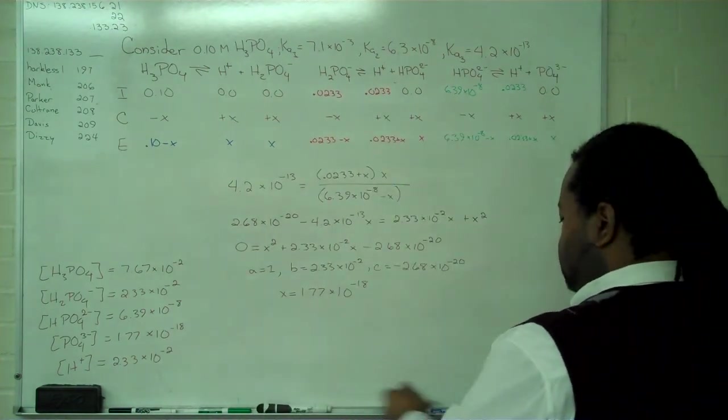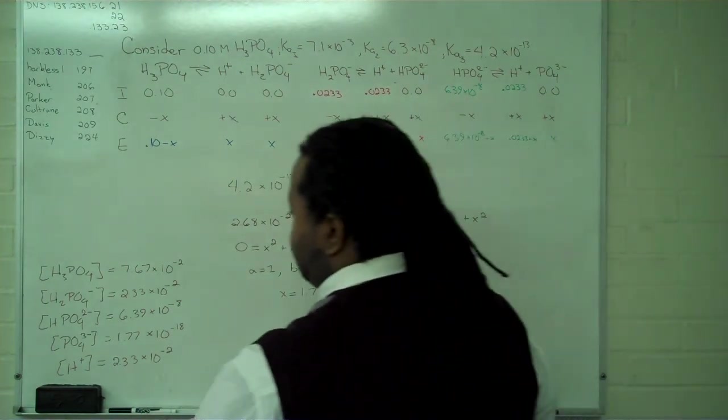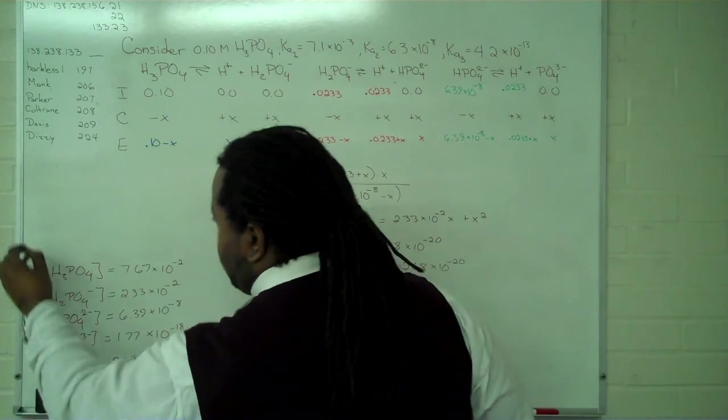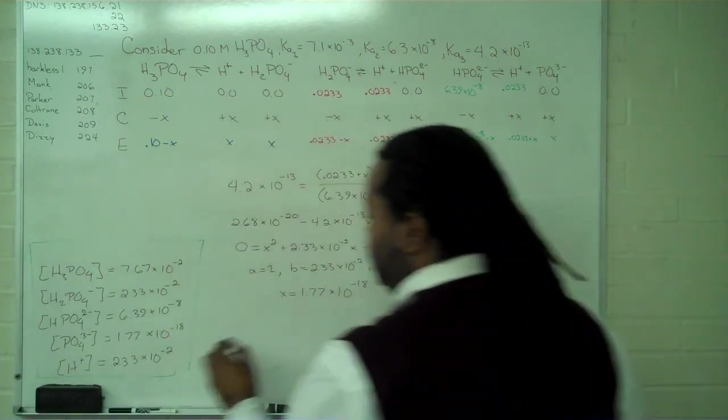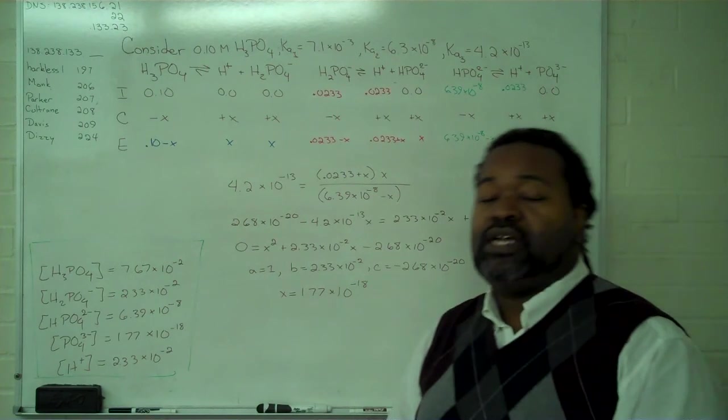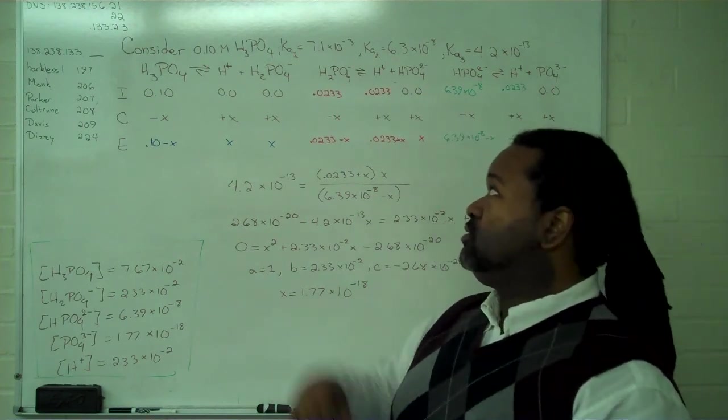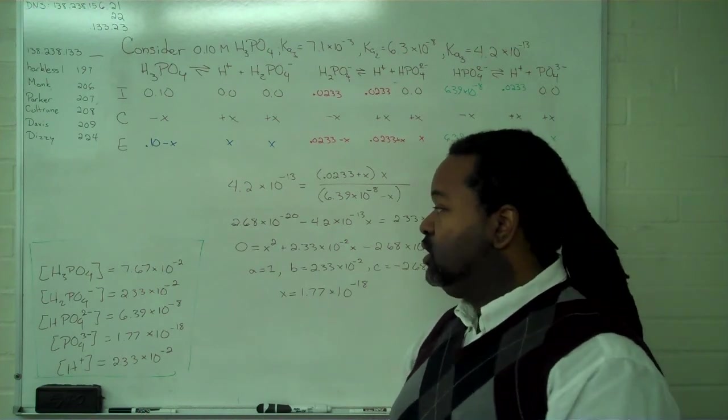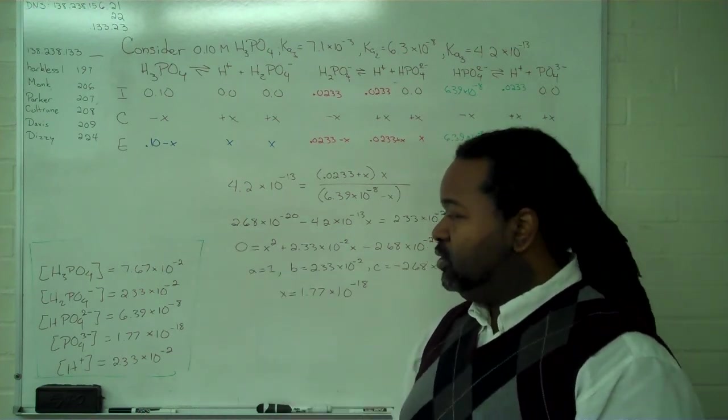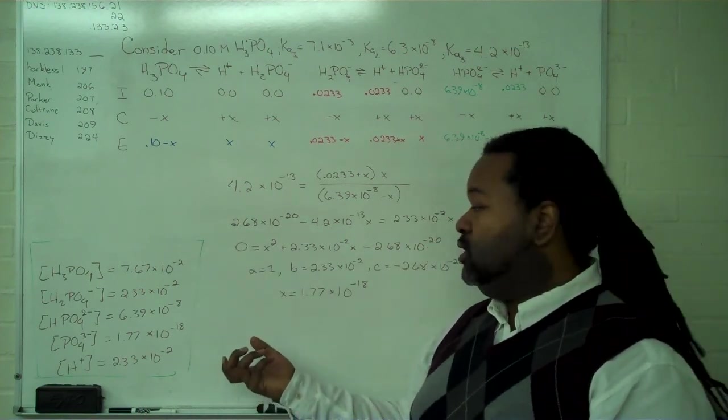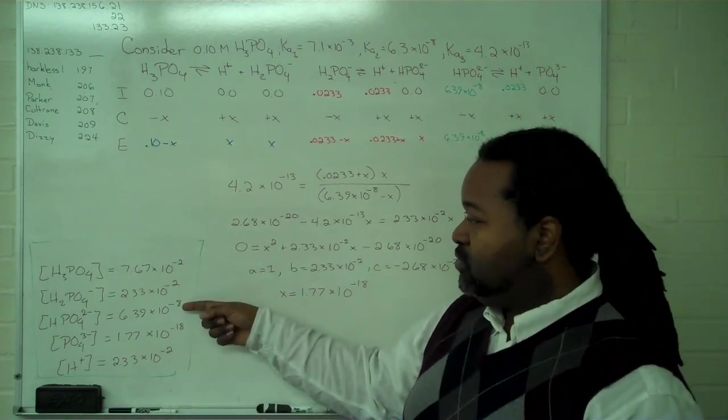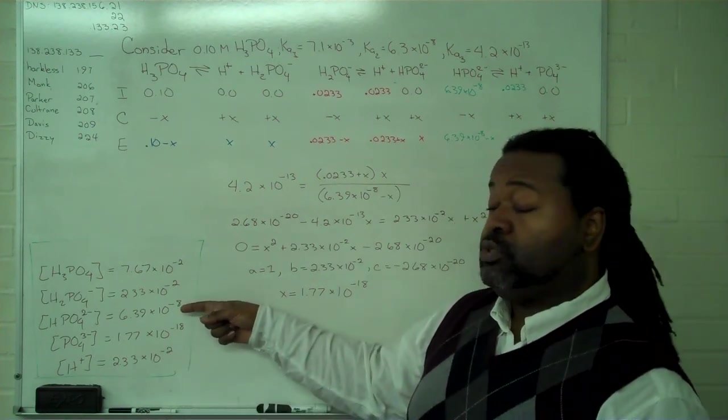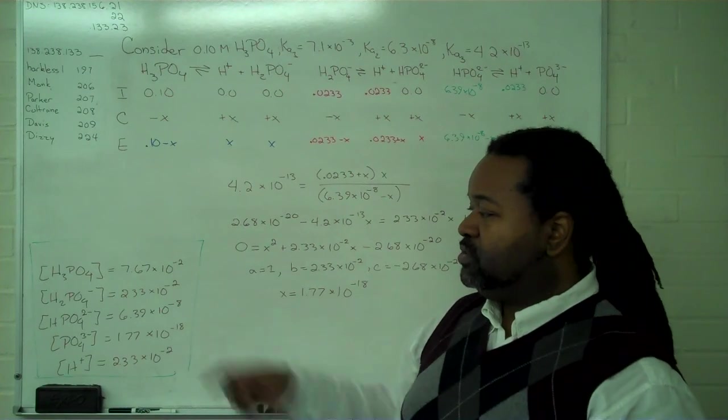And so these results are very much consistent with what we observe experimentally, that the majority of hydrogen ion concentration in the dissociation of phosphoric acid comes from that first dissociation. And we get increasingly negligible amounts of hydrogen as we see increasingly negligible amounts of further dissociated acid.